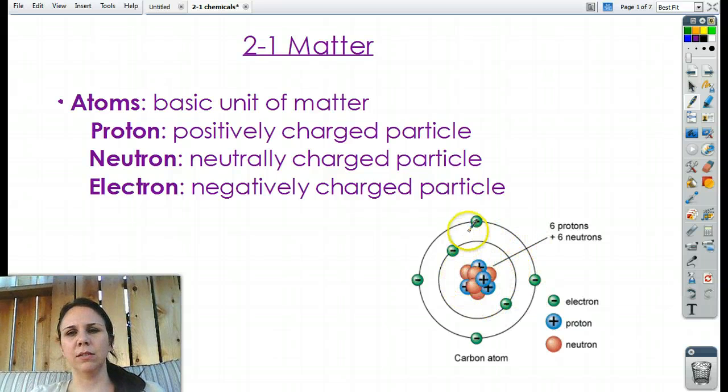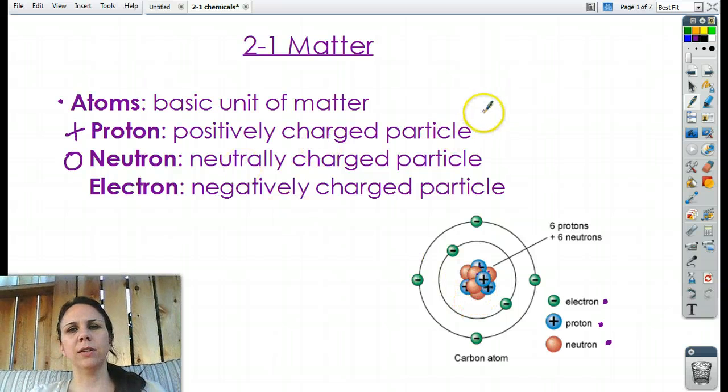And I have a picture of an atom over here. And you can see some of the different pieces. I've got it labeled right here, electrons, protons, and neutrons. And so a proton, you can think when you're pro something, you're for it or you're positive for it. And so these are little positively charged particles. So in here, they're all the little blue things.